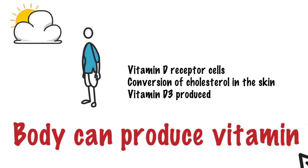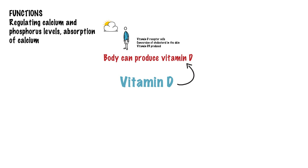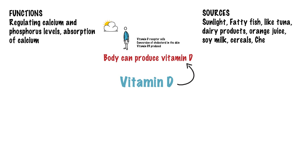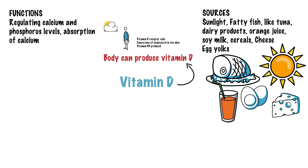Coming to the functions of Vitamin D: it maintains normal blood levels of calcium and phosphorus. Vitamin D also aids in the absorption of calcium, helping to form and maintain strong bones. Sources of this vitamin include sunlight, as we just learned. Apart from this, there is fatty fish like tuna, mackerel and salmon, foods fortified with Vitamin D like some dairy products, orange juice, soy milk and cereals, beef liver, cheese and egg yolks. All these are excellent sources of Vitamin D.